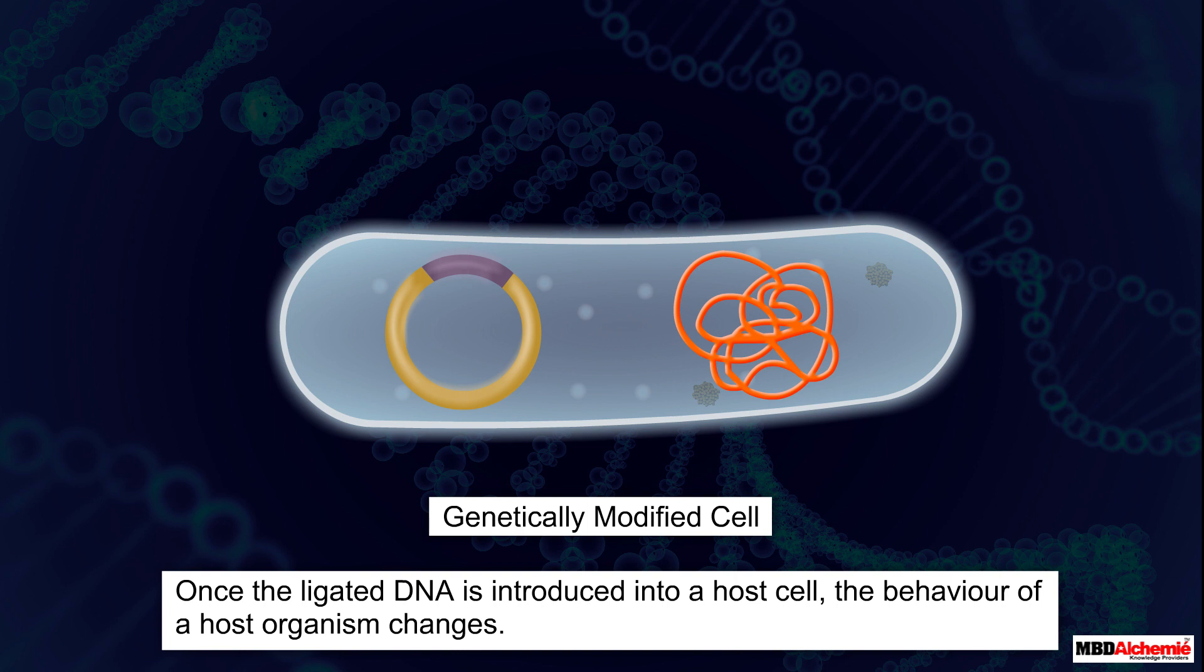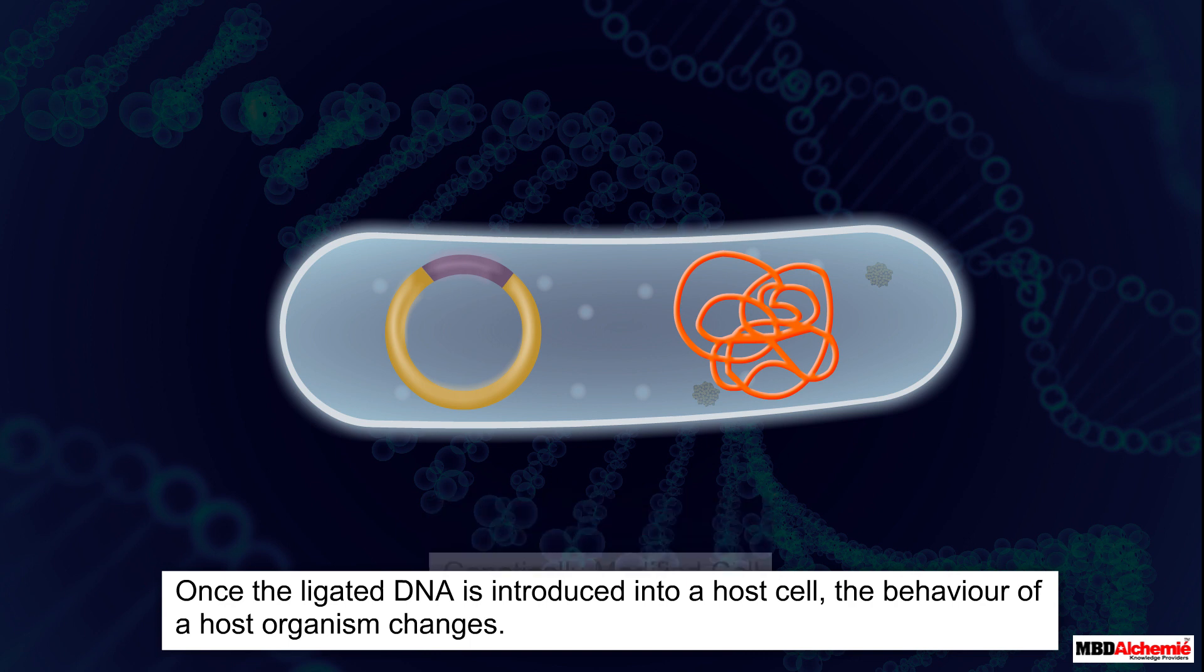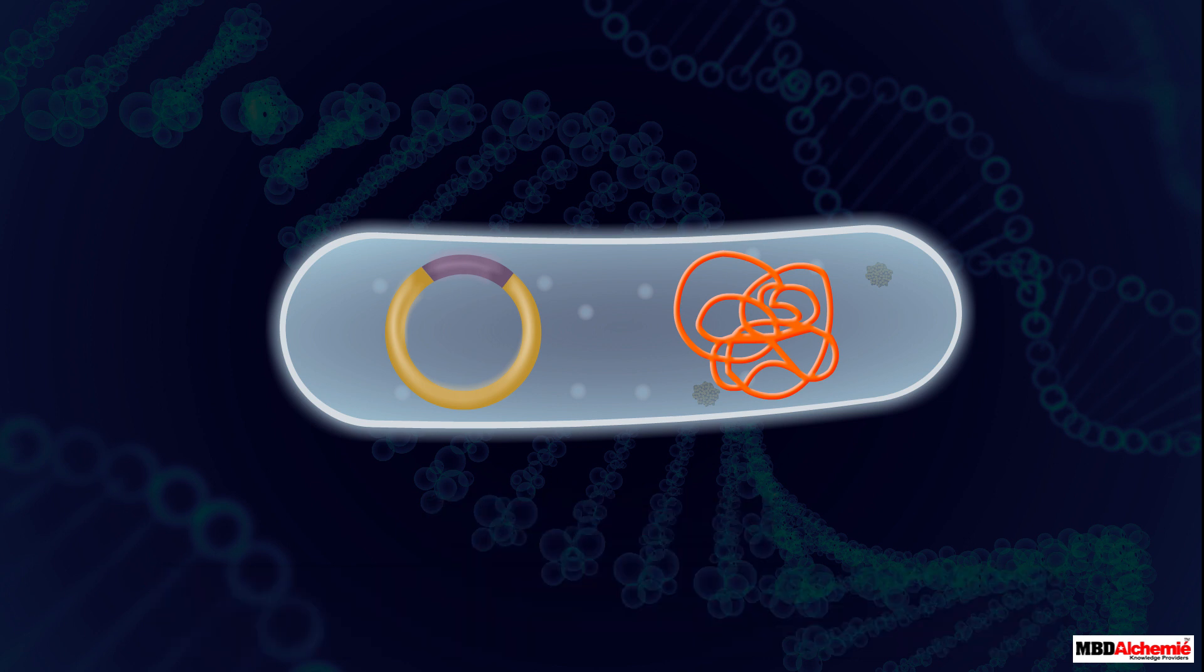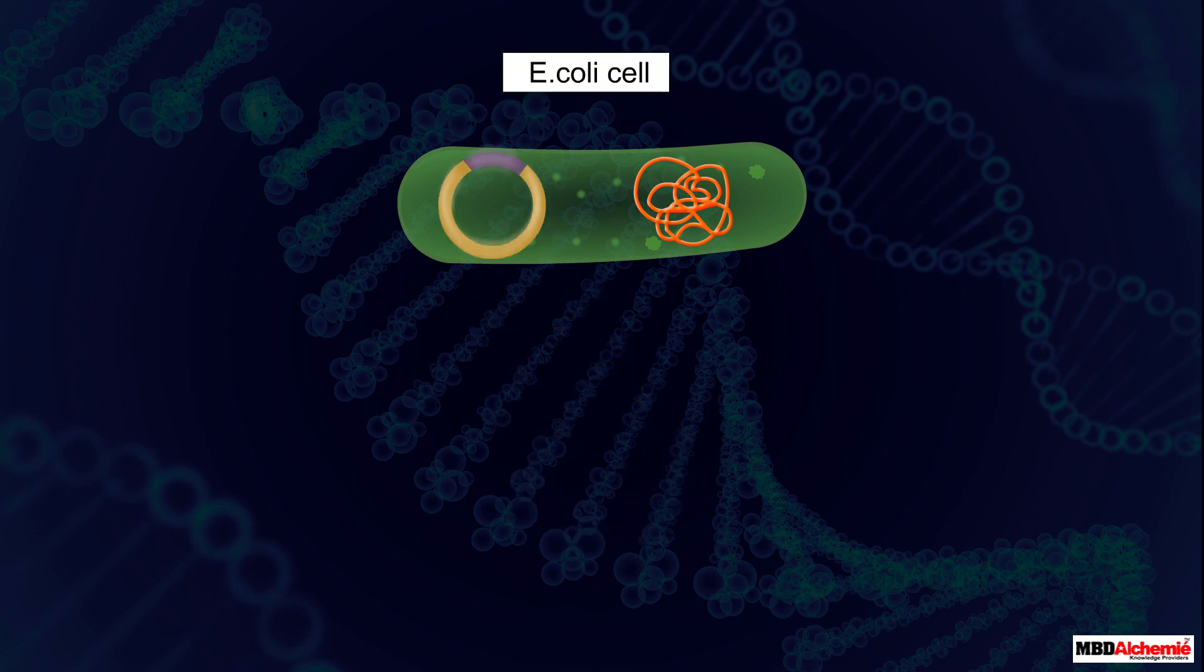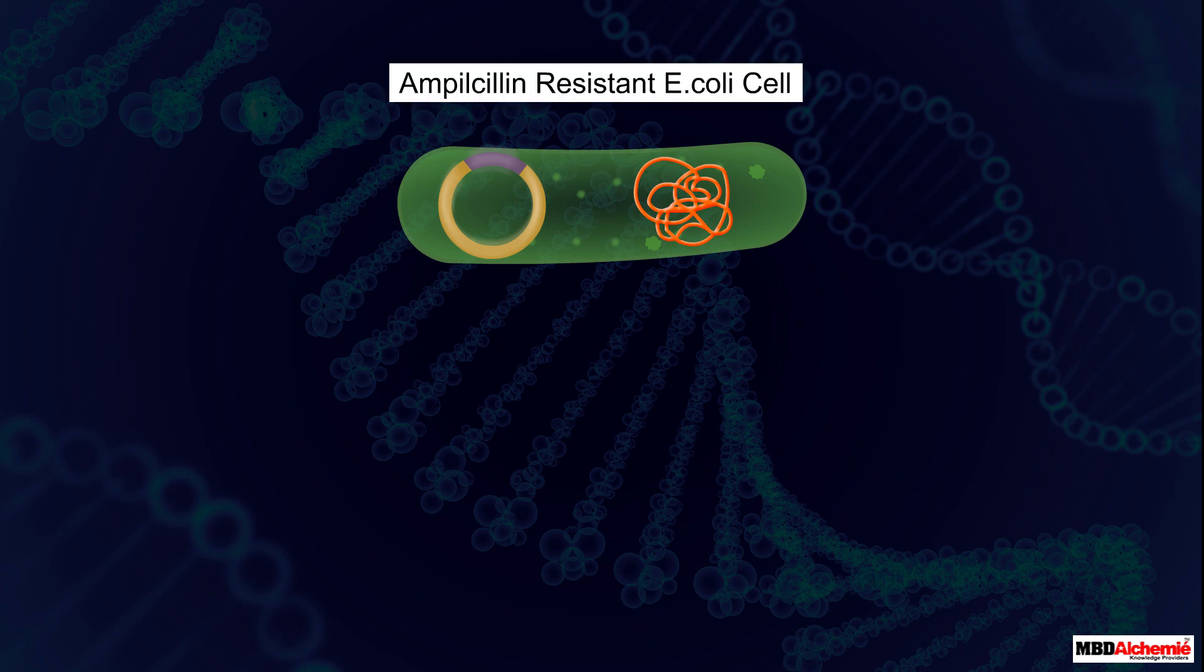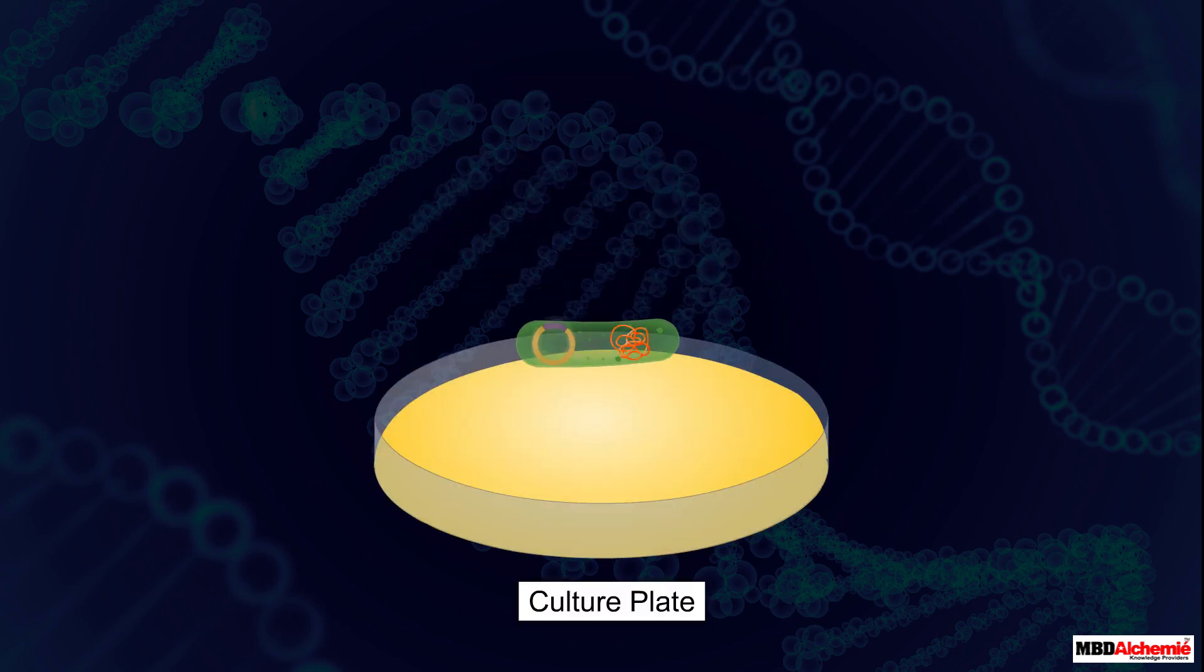As a result, the behavior of the host organism changes. Let us understand this with the help of an example. For this, let us take a recombinant DNA bearing a gene which is resistant to ampicillin and insert it in the E. coli cells. On doing so, the E. coli cells become resistant to ampicillin.